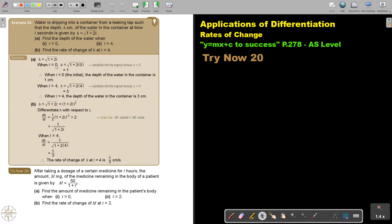So when t is 0, I just substitute in the place of t, 0, and I find 1. So substitute into the original formula. When t is 4, I substitute 4 and I get 3. So when t is 4, the depth of the water in the container is 3 centimeters.